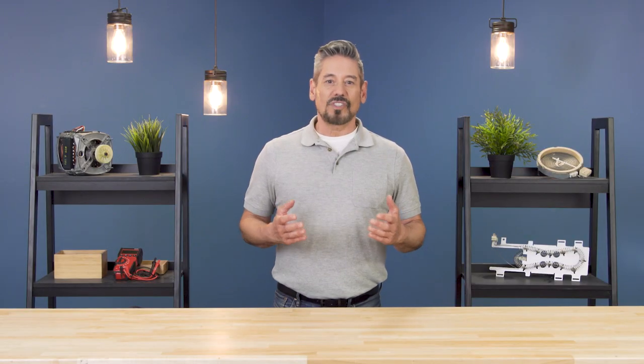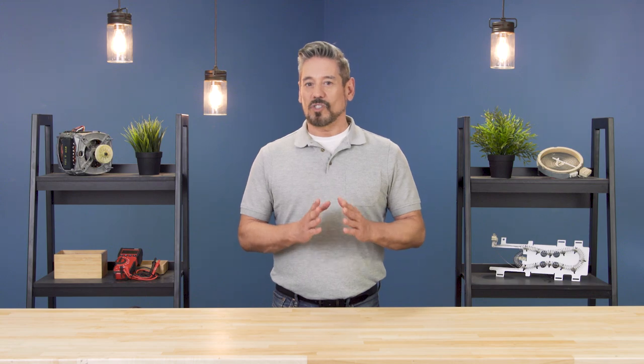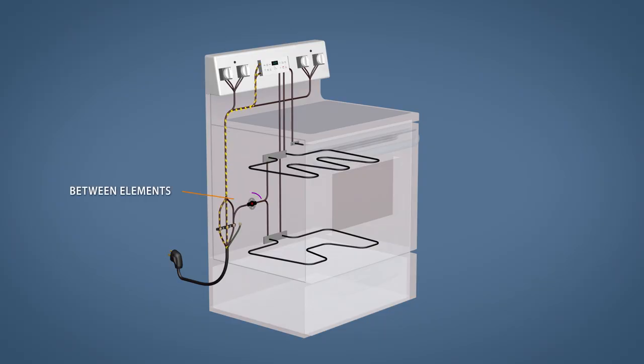How this switch is connected will change which part of the oven loses power. On most ovens the switch will be connected to the bake and broil elements. This means a blown fuse will prevent the oven from heating, but won't affect the display.